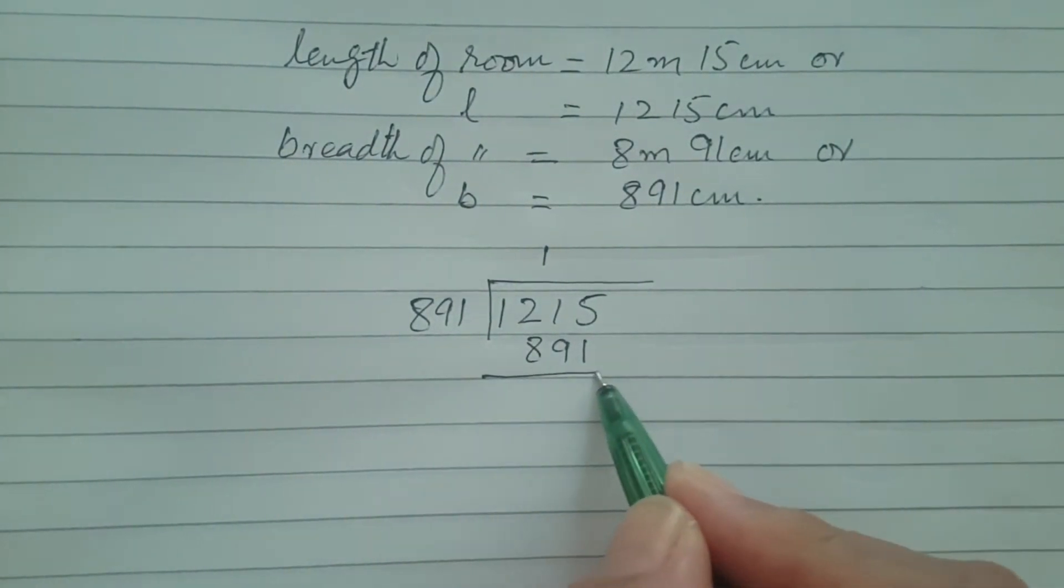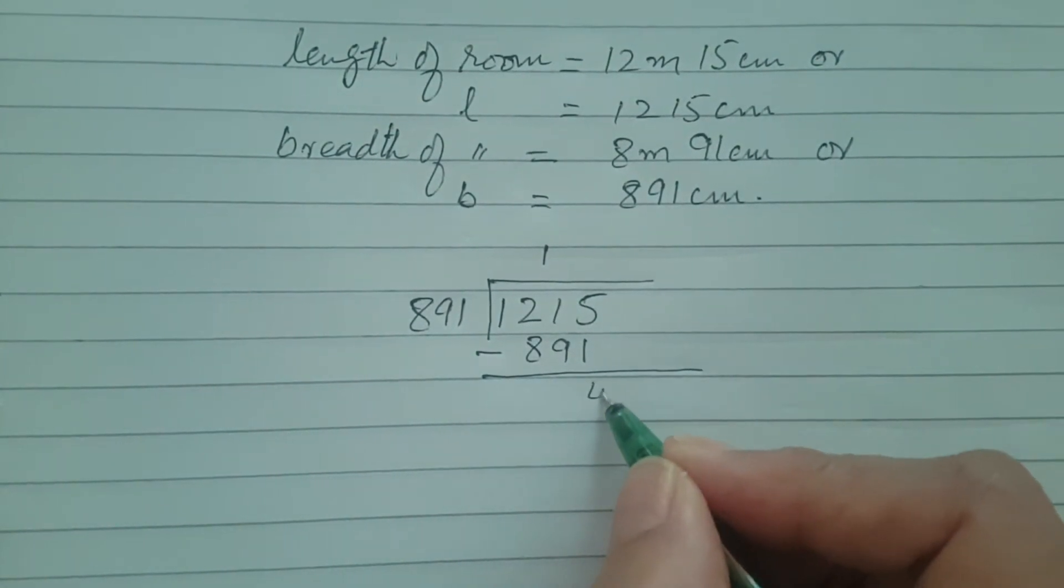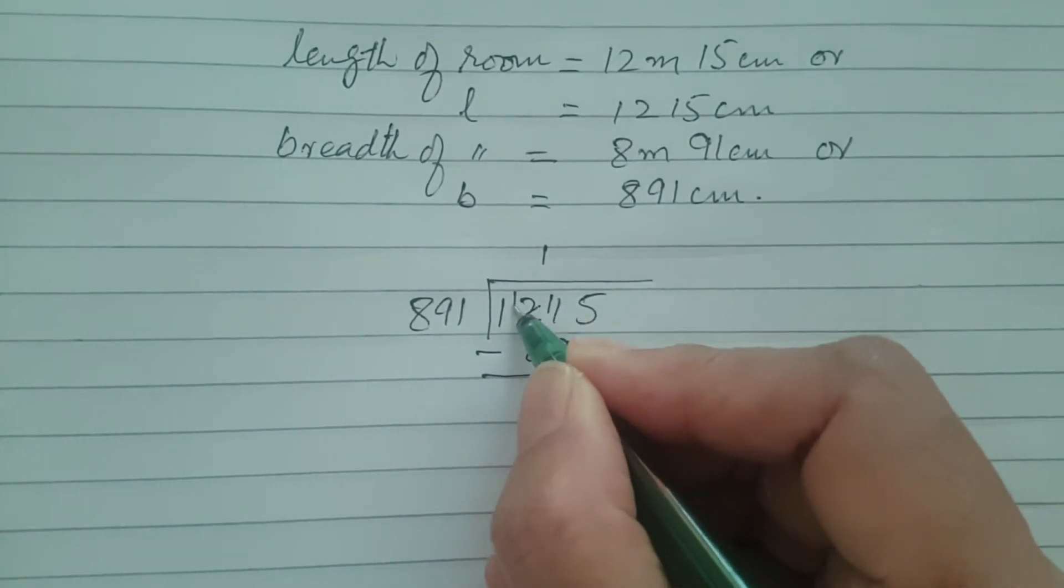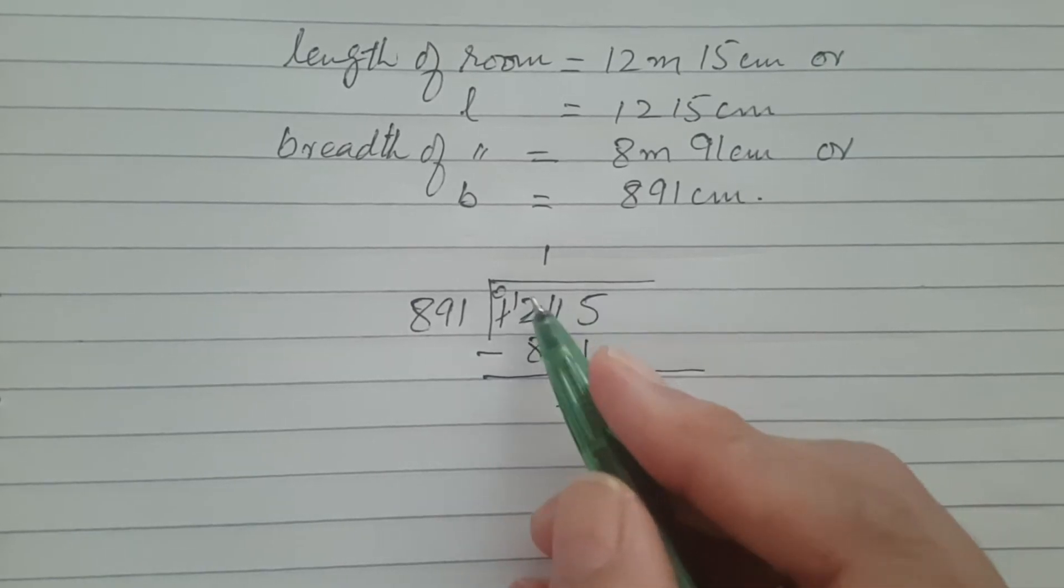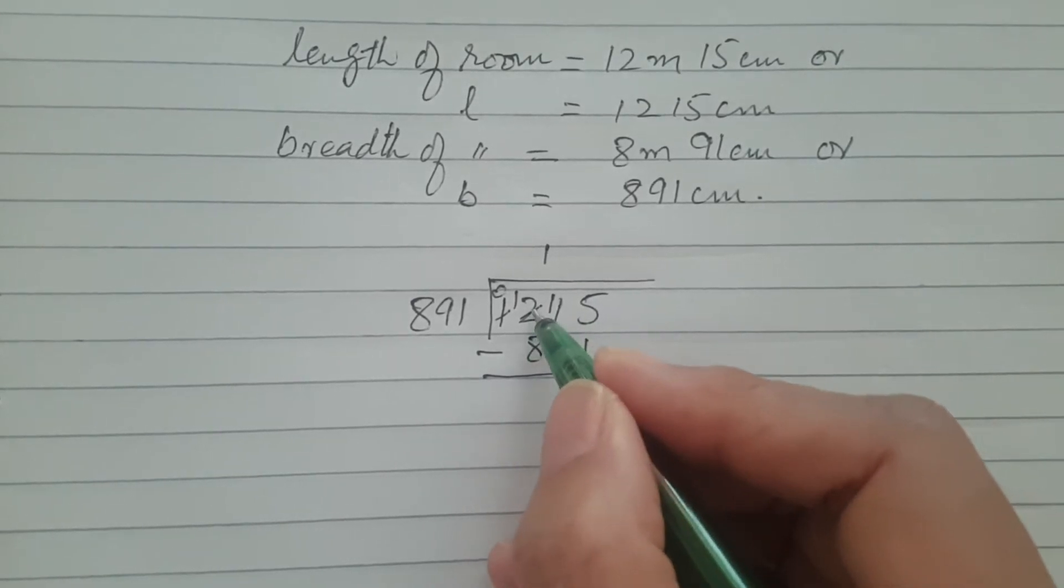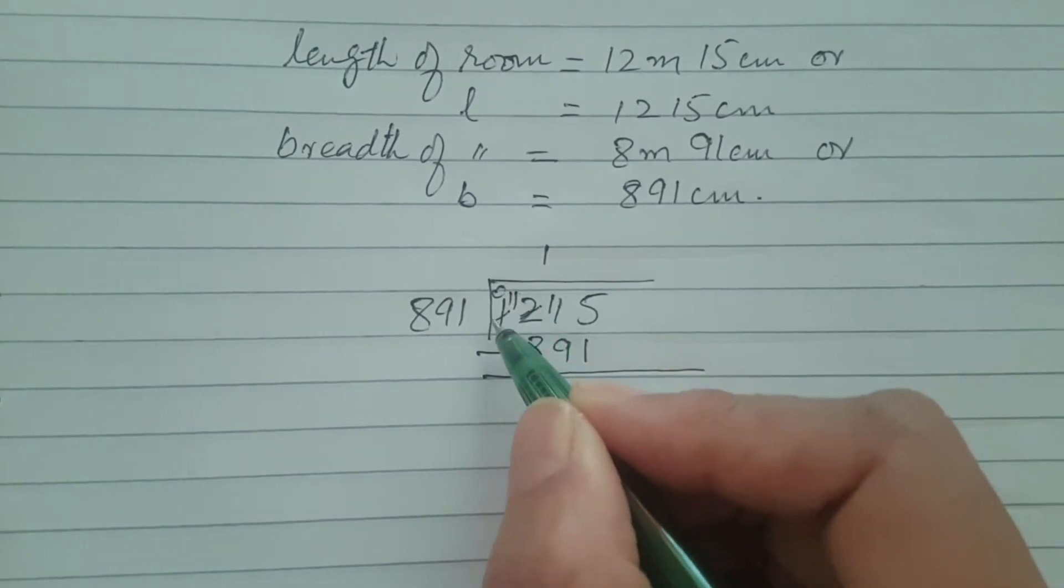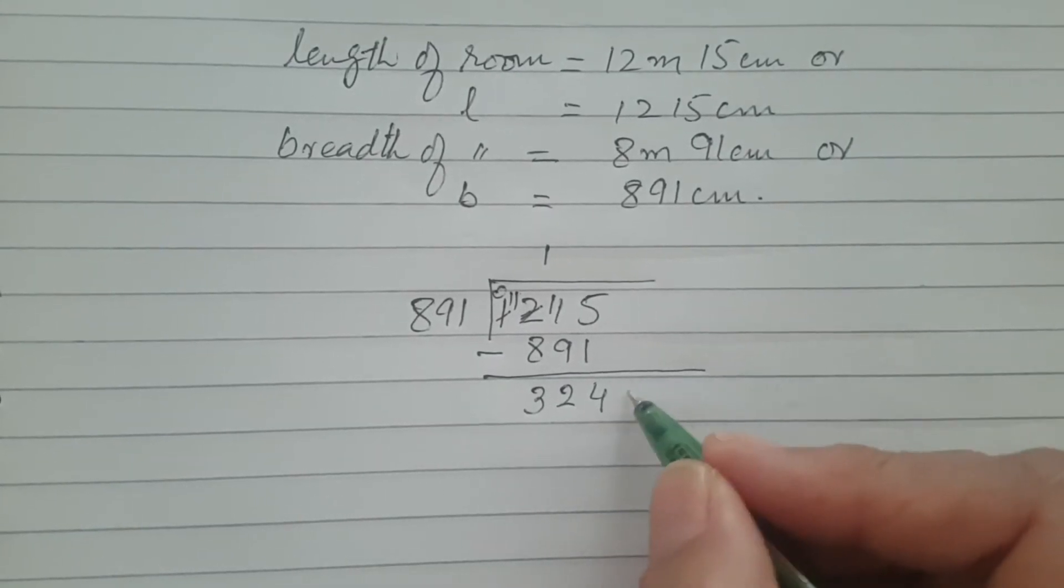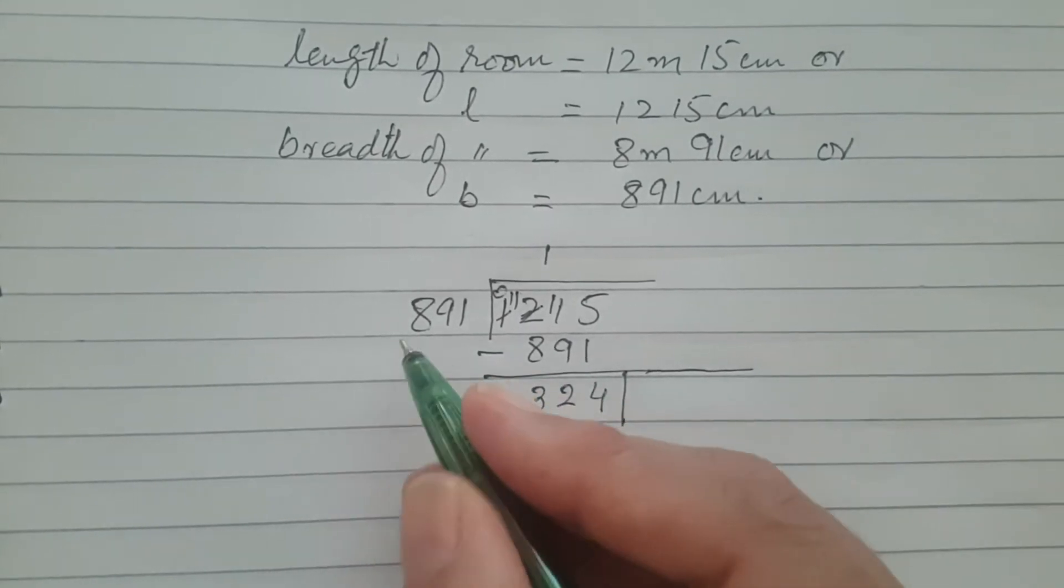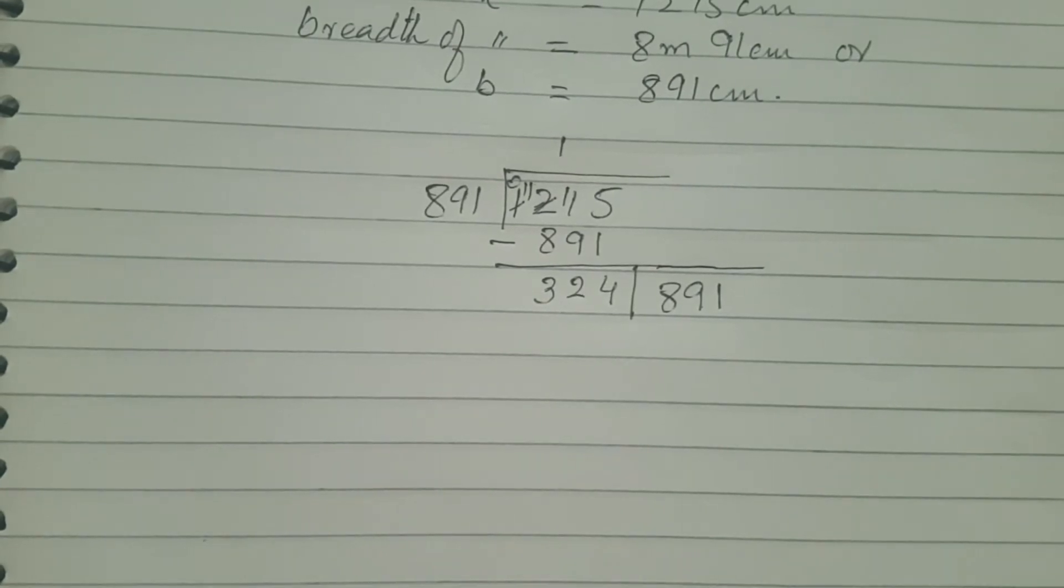891 one time is 891 because 2 times is a greater number from 1215. Do the subtraction: 5 minus 1 is 4, 11 minus 9 is 2, and 11 minus 8 is 3. 324 is the remainder and your dividend is the previous divisor 891. Now do the division again.